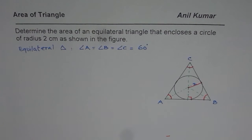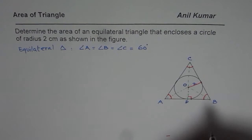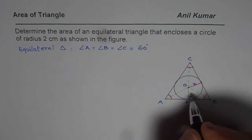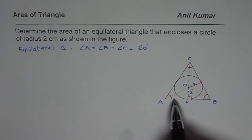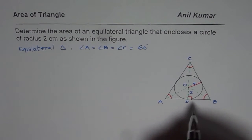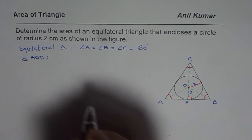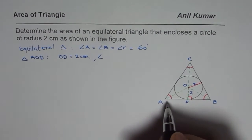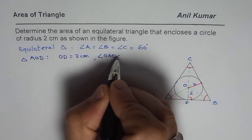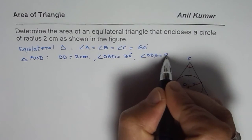Let me call this foot point D. So CD is the altitude. The radius of the circle is 2 units, meaning OD equals 2, where O is the center. Since all angles are 60 degrees, half of that angle is 30 degrees. In triangle AOD, we know OD = 2 cm, angle OAD = 30 degrees, and angle ODA = 90 degrees — it is a right triangle.